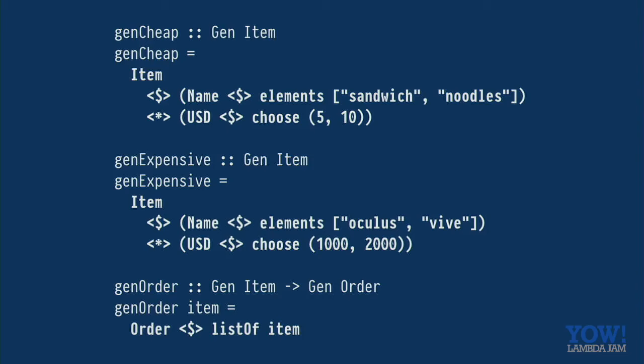So what happens if our data generation needs get a bit more complicated? What about if we have two different kinds of items? What if we want to generate some cheap things, sandwiches and noodles, or if we want to generate some expensive things and then we want to have this higher order generator where we can generate orders that have either cheap or expensive items. So that's generators are awesome. We can use applicative and functor and monad to compose them.